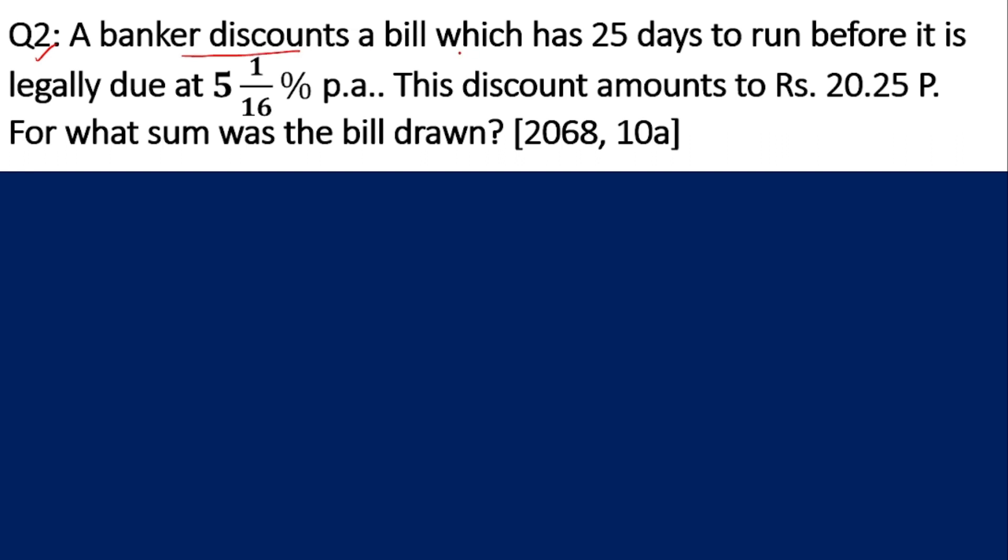Question number two: A banker discounts a bill which has 25 days to run before it is legally due at 5 1/16 percentage per annum. The banker discounted this bill at this rate. The bill has 25 days remaining until maturity date. So for these 25 days, the banker calculated discount at this rate, and the discount value came to rupees 20.25. The question asks: for what sum was the bill drawn? In simple words, we need to find the face value of the bill.